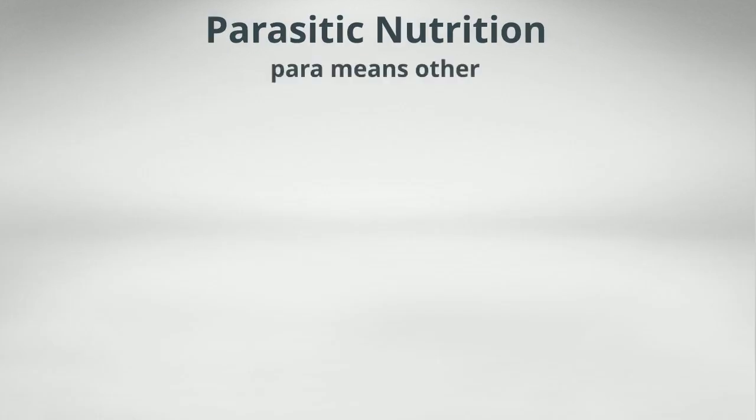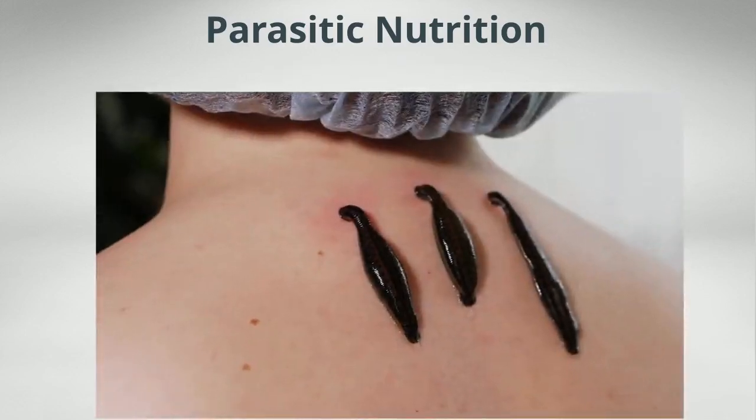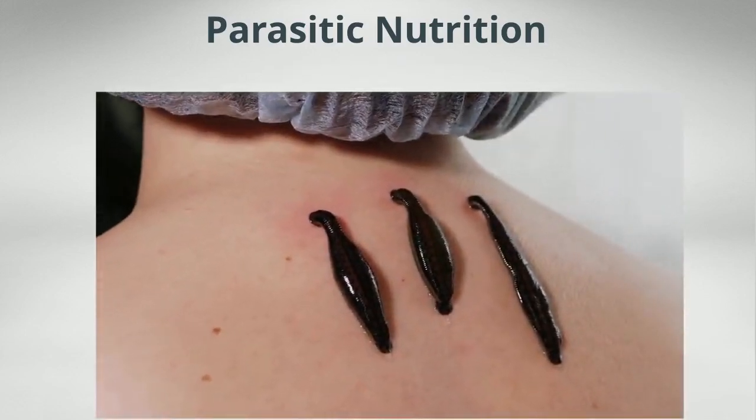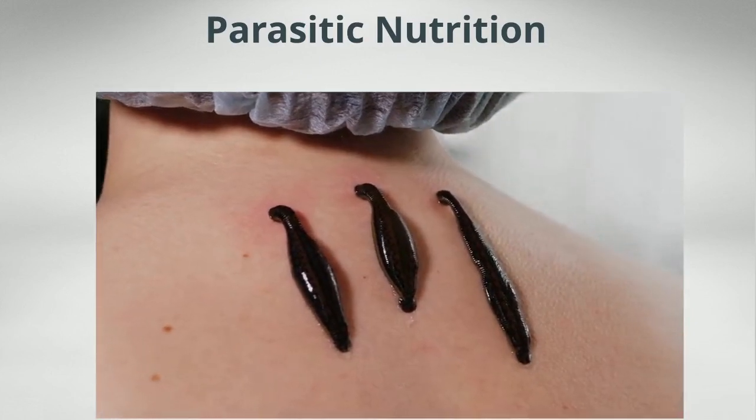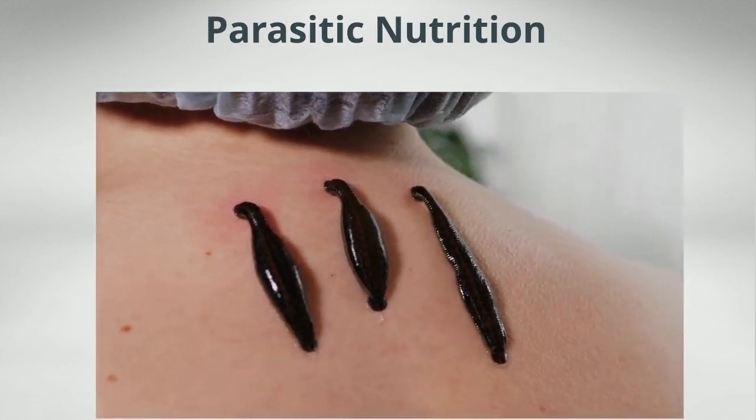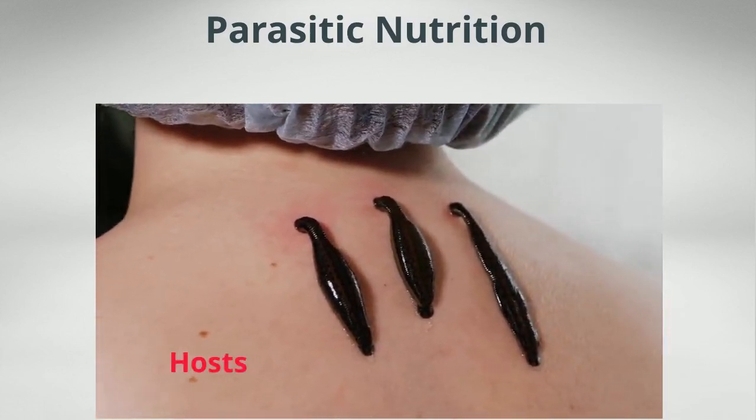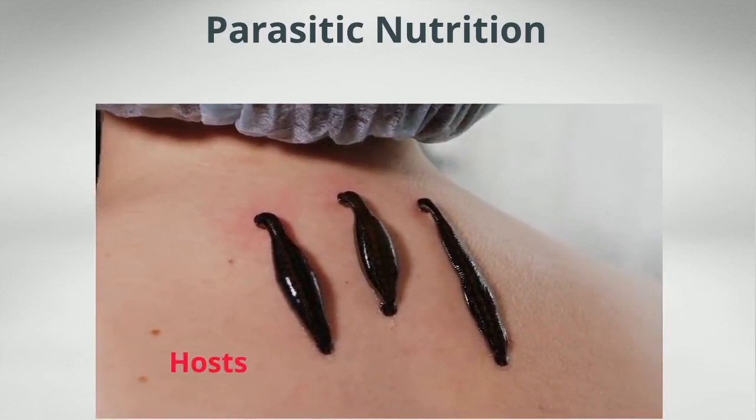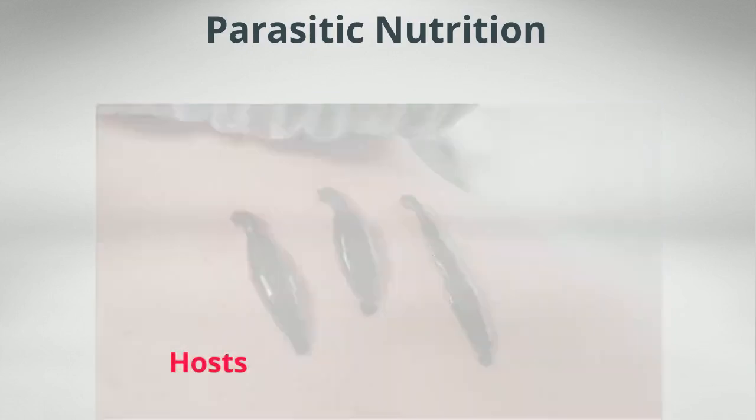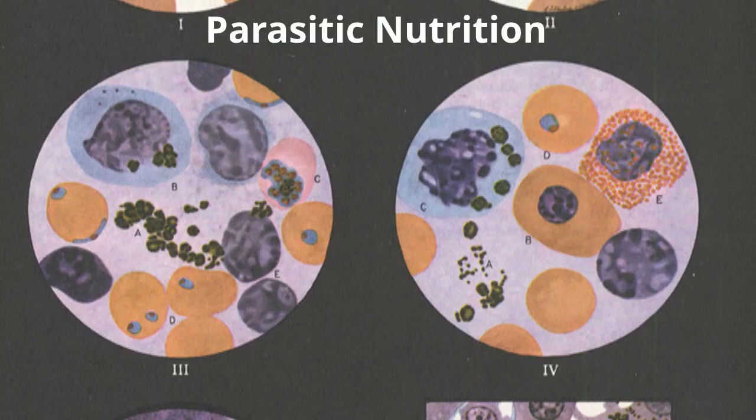Parasitic Nutrition. The term para means other. Parasites are organisms that live in association with other organisms. By doing so, they derive nutrition from other organisms. The organisms from which parasites derive their nutrition are called hosts.